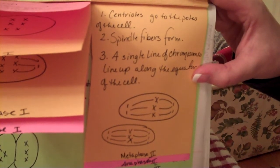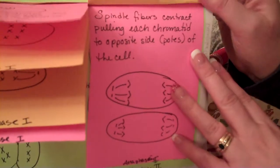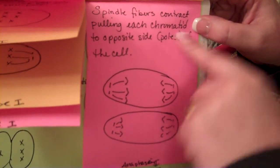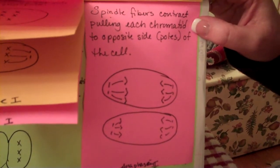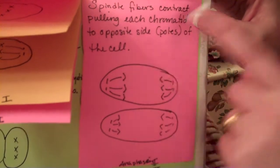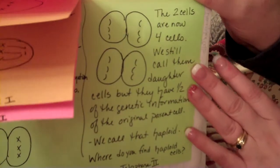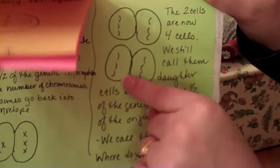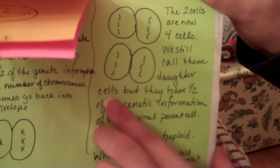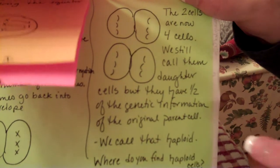I wonder what haploid means — haploid, half the genetic information. In Anaphase 2, the spindle fibers contract, pulling each chromatid to the opposite poles of the cell. A chromatid — I think we labeled chromatids two days ago — is half of a chromosome. Half goes here, half goes here, and it's happening in two cells. Then in Telophase 2, those two cells split into four. They have half the genetic information — we still call them daughter cells, but they only have half of the genetic information of the original parent cell. We call half the genetic information haploid.